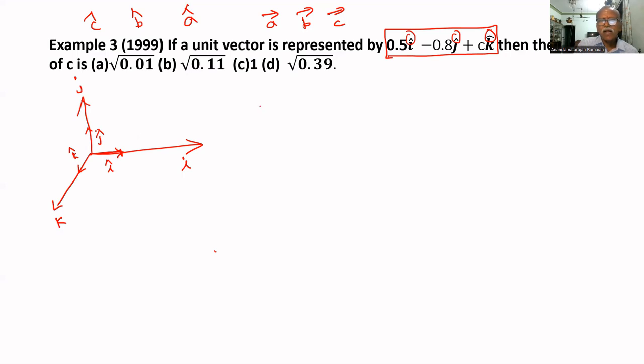What is the coefficient of I? One. The coefficient of I is one, its magnitude is one. This represents the direction only. I cap represents direction only, no magnitude - magnitude is one. J cap represents direction only, K cap represents direction only, magnitude is unity. That's why these are all called unit vectors.